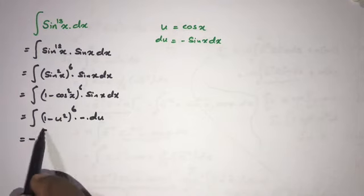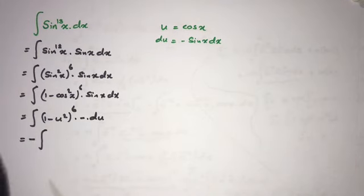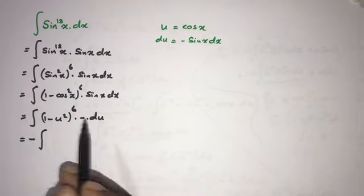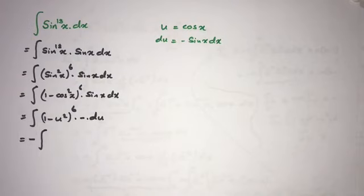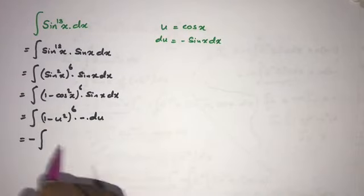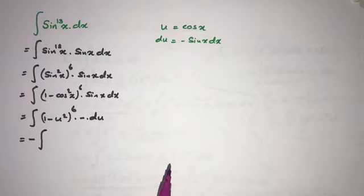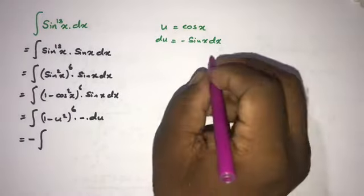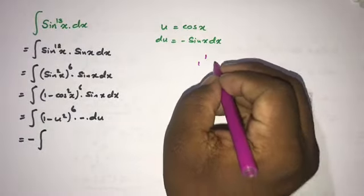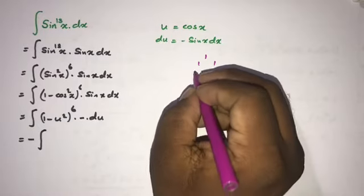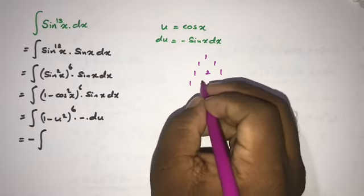Now we have minus the integral of (1 minus u squared) to the sixth power du. To expand this, we can use the binomial theorem or Pascal's triangle.